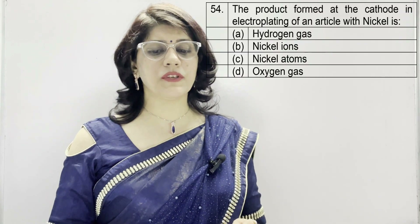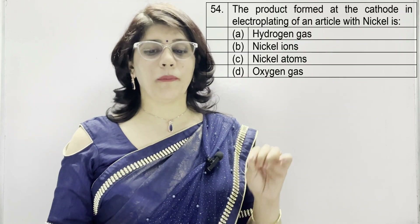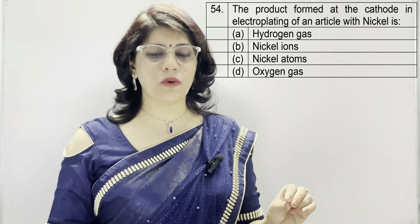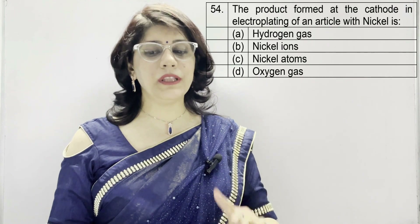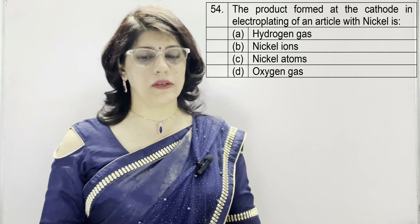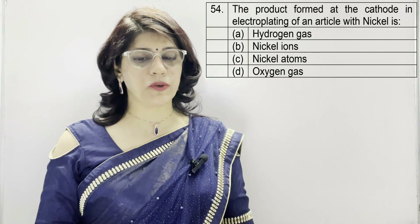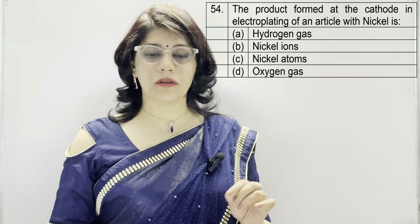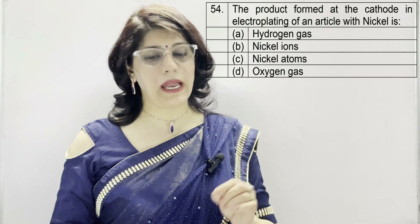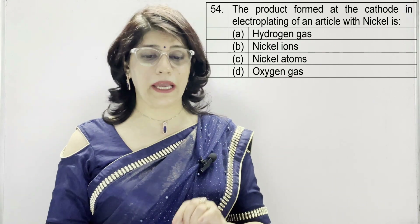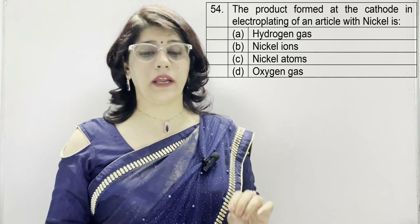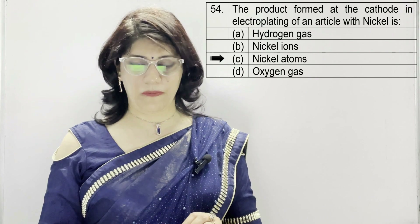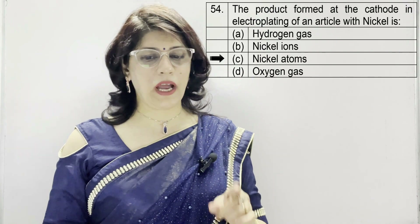In question number 54: the product formed at the cathode in the electroplating of an article with nickel is — A: hydrogen gas, B: nickel ions, C: nickel atoms, D: oxygen gas. The correct option is C — nickel atoms. This question is taken from this year's specimen paper.